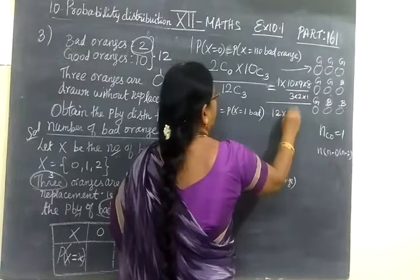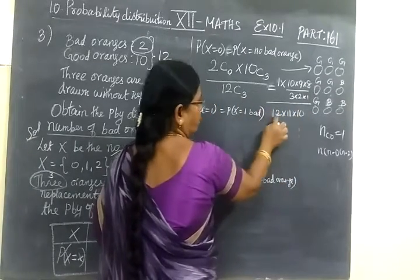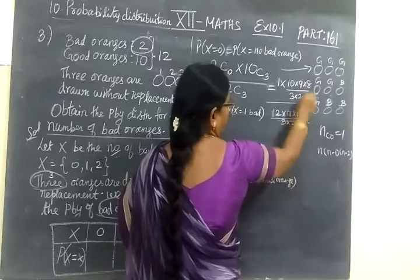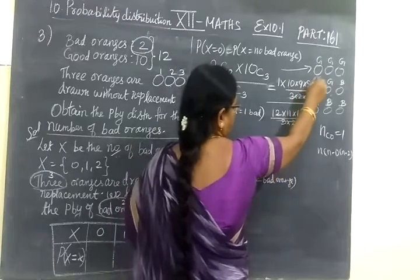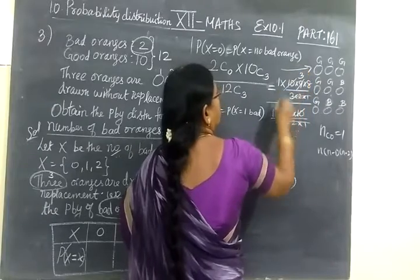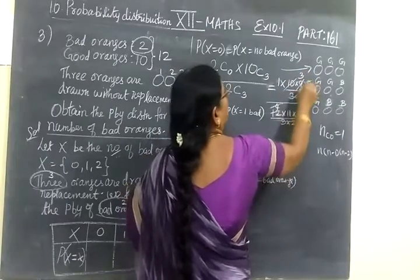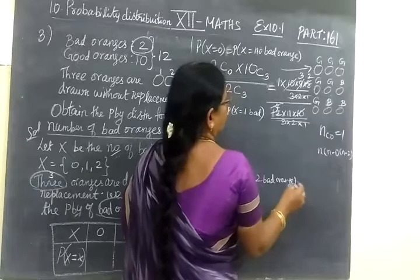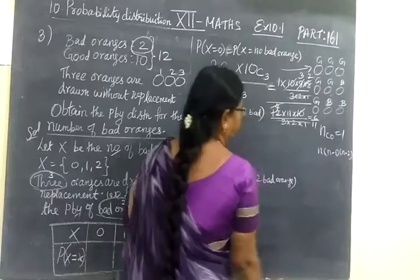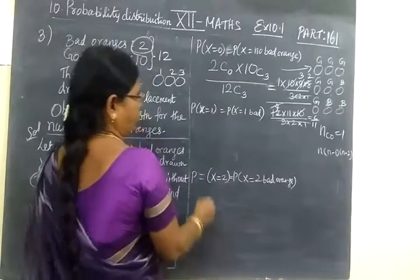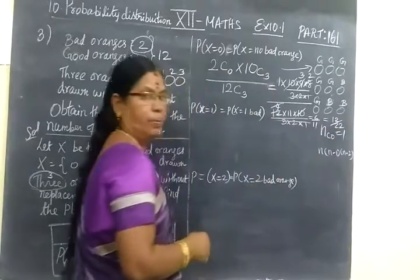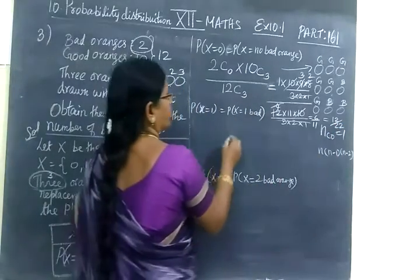So 12 into 11 into 10, 3 is nothing but 1. You write 3 into 2 into 1. It will be cancel. Then you can take 10, cancel. Take 3 table, 3 threes are 9, 4 threes are 12. This will be cancelled and unit 2. So the answer is 6 by 11, or 12 by 22. Because the next question the denominator will be 22, so it should be same for this one.